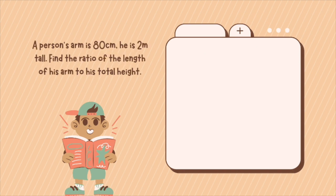Another example for your ratio. A person's arm is 80 centimeters. He is 2 meters tall. Find the ratio of the length of his arm to his total height. Now, when you do this, first thing that you have to understand with regards to ratio is when we compare, both should have the same units. So it's either you will have centimeters or you will have meters, but it cannot be a centimeter and a meter at the same time.